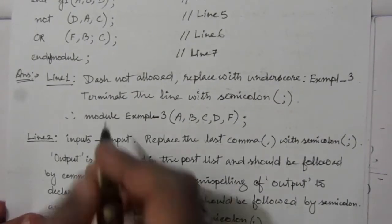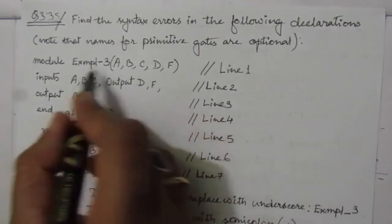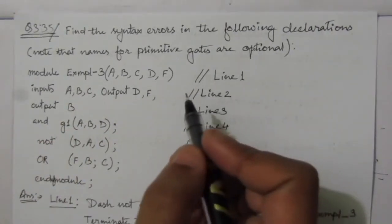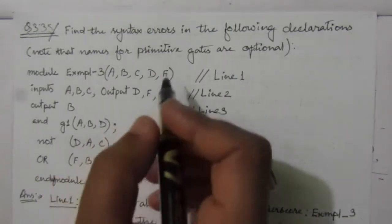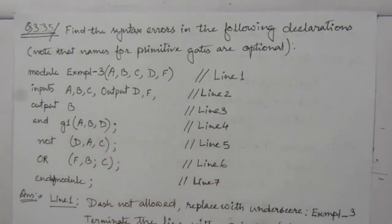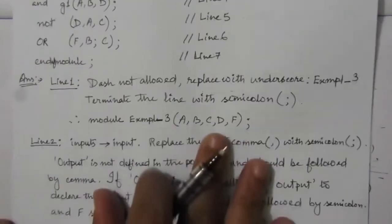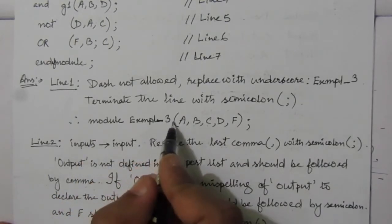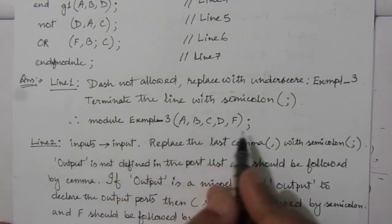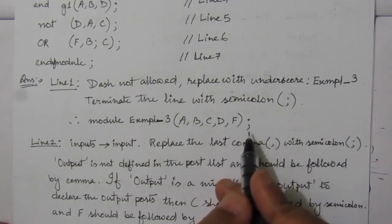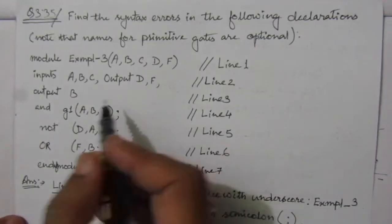We also have to terminate the line with a semicolon, because in Verilog gate-level description, each line must be terminated with a semicolon. So the corrected first line is: module example_3 (A, B, C) — the port declaration — terminated with a semicolon.